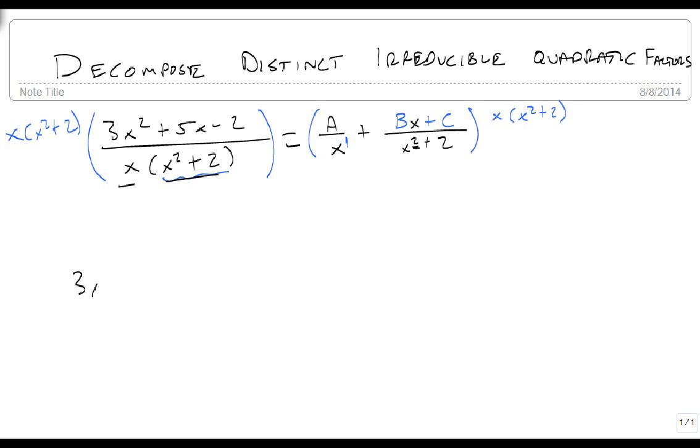Which is going to give me 3x squared plus 5x minus 2, since everything divides out there, equals A times x squared plus 2, plus Bx plus C, times x.